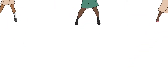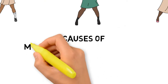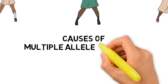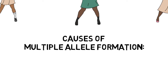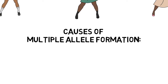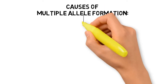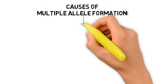The phenomenon when a gene contains more than two alleles is called multiple allelism. The best example of multiple allelism is the human blood group. So we'll learn about the causes of multiple allelism. There is only one cause, and that is called mutation — repeated mutation.